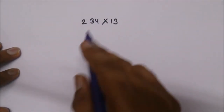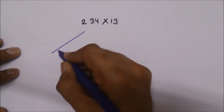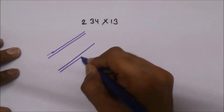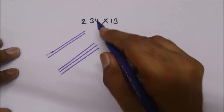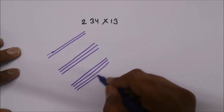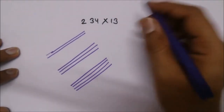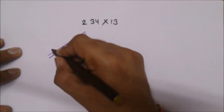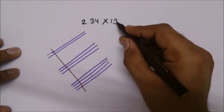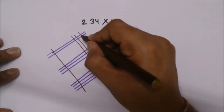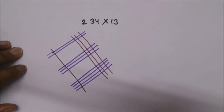So first of all draw two lines, then draw three lines, then draw four lines. After this, for the number 13 we need to draw one line, and then three lines.